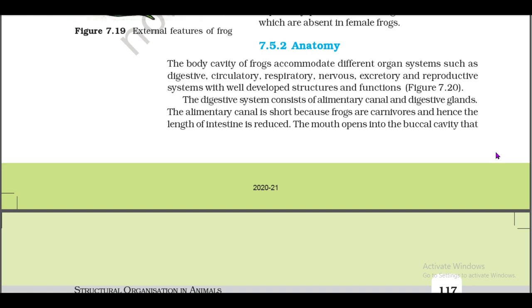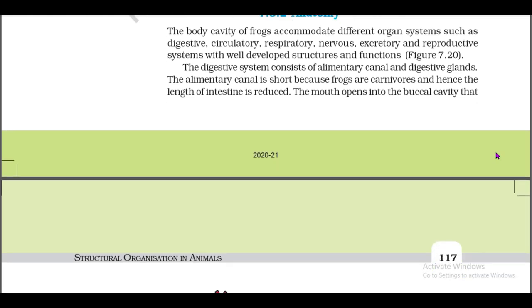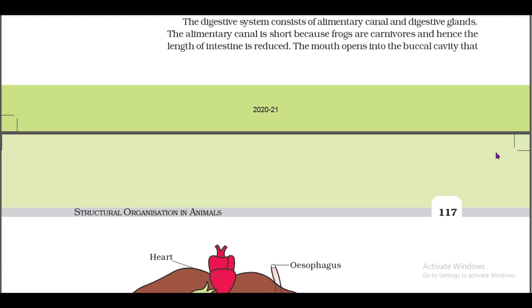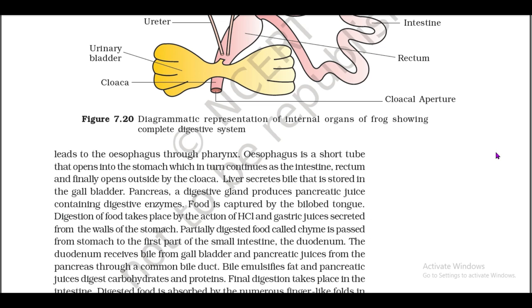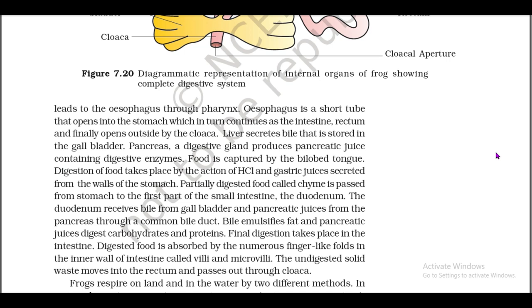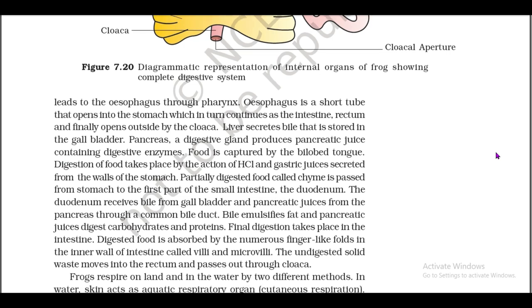7.5.2: Anatomy. The body cavity of frogs accommodates different organ systems such as digestive, circulatory, respiratory, nervous, excretory, and reproductive systems with well-developed structures and functions (figure 7.20). The digestive system consists of the alimentary canal and digestive glands. The alimentary canal is short because frogs are carnivores and hence the length of the intestine is reduced. The mouth opens into the buccal cavity, which leads to the esophagus through the pharynx. The esophagus is a short tube that opens into the stomach, which in turn continues as the intestine, rectum, and finally opens outside by the cloaca.